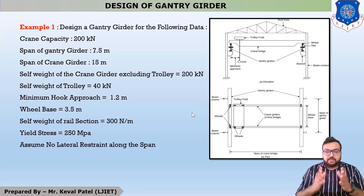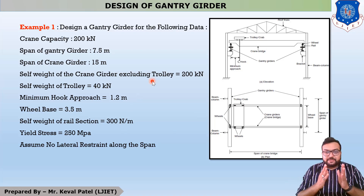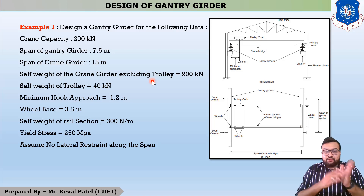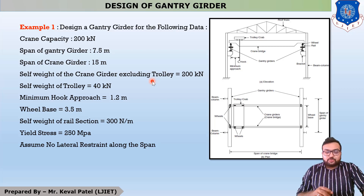Hello students, this is the third lecture of our example number 1, which is a design of gantry girder. In the last lecture, we discussed up to step number 2, which is the maximum bending moment generated on the gantry girder, and in the first step we discussed about the maximum reaction on a wheel. So let us start our step number 3.